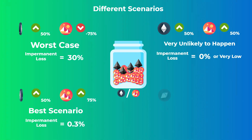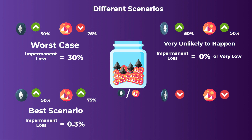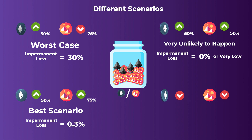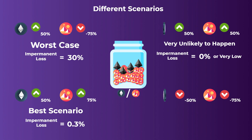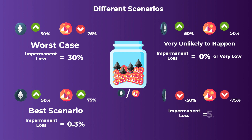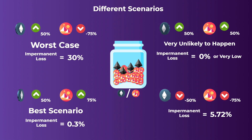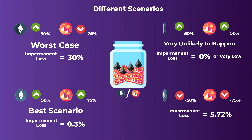The third case is when both tokens rise in price but with different percentages — for example, one rises 50% and the other rises 75%; impermanent loss is very low at just 0.3%. This is the best scenario when investing in liquidity pools, as you benefit from the price increase without losing much to impermanent loss. The fourth case is when both token prices fall with different percentages; impermanent loss is also small but larger than the third case — for example, one falls 50% and the other 75%, resulting in an impermanent loss of 5.72%.